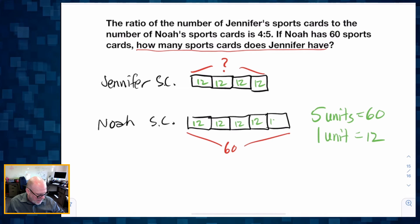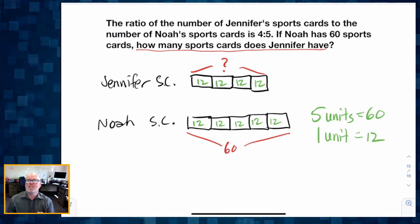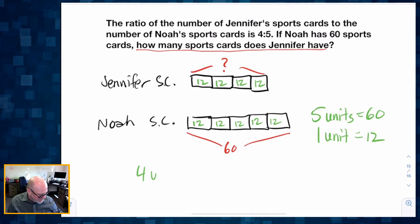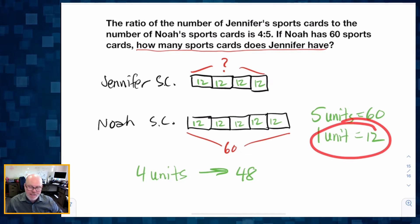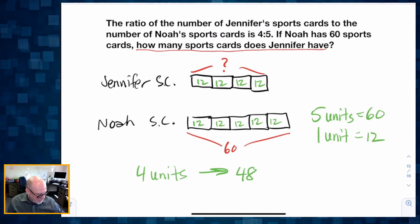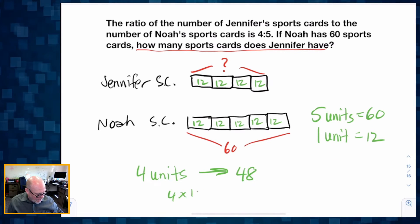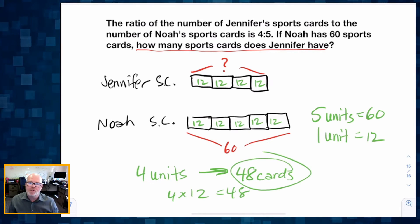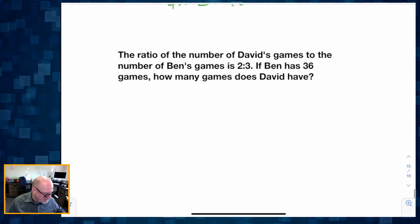And I now know how many sports cards Jennifer has. Jennifer has four units, so four units has to equal 48 because each unit represents 12. So 4 times 12 equals 48. Jennifer has 48 sports cards. All right, let's do one more example.